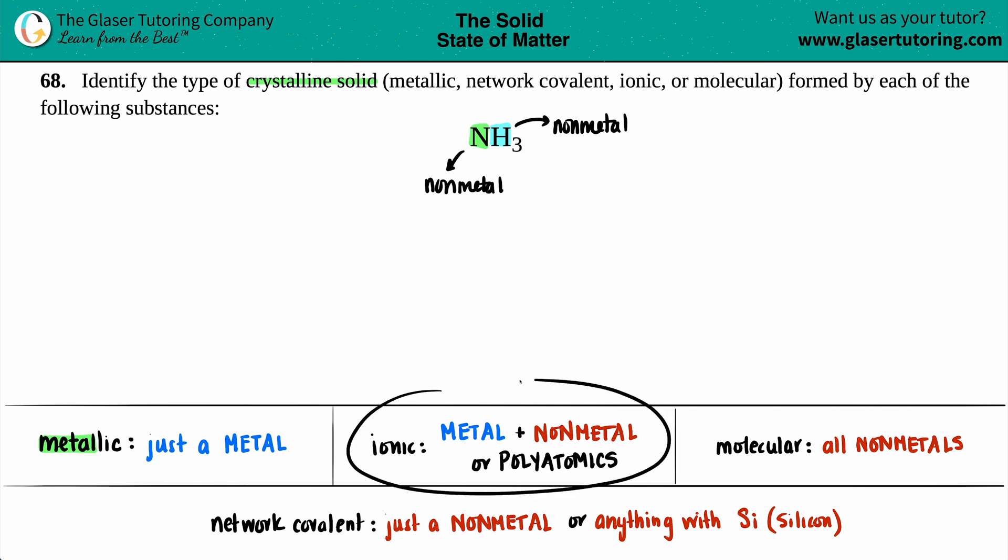Would this be an ionic crystalline solid? Well, ionic crystalline solids come from ionic compounds. Remember, an ionic compound is between a metal and a non-metal, or if you start seeing polyatomics. But once again, I have no metals here and I don't spot any polyatomics, so it can't be ionic.